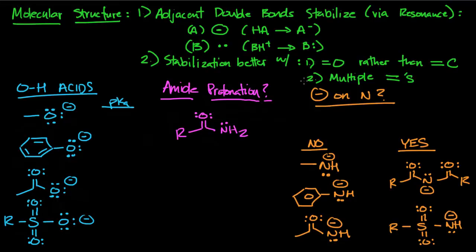A couple of examples to demonstrate this. The OH acids, right? Here we have methanol. The pKa for methanol, it's got no double bonds next to it. We're going to say that the pKa for methanol is 15.2.